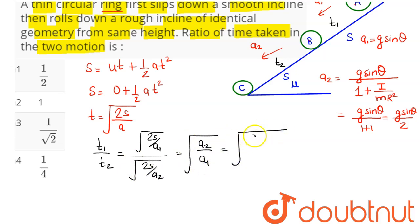Hence A2 acceleration we have here as G sine theta divided by 2, and for A1 we can say this comes as G sine theta. Hence this ratio comes as 1 by root under 2, which here is option number 3.